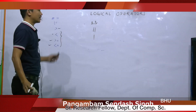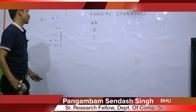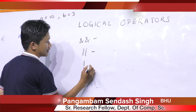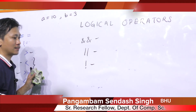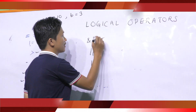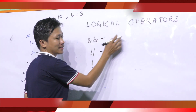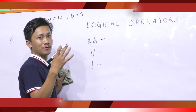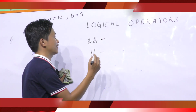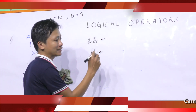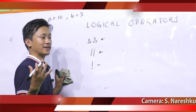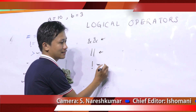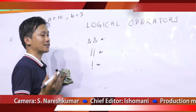Next, logical operators. There are three operators in logical operators: first one is logical AND, second is logical OR, and third is logical NOT. The AND operator returns true if both operands are non-zero. The OR operator returns true if any of the operands is non-zero. The NOT operator reverses the logical state of an operand.